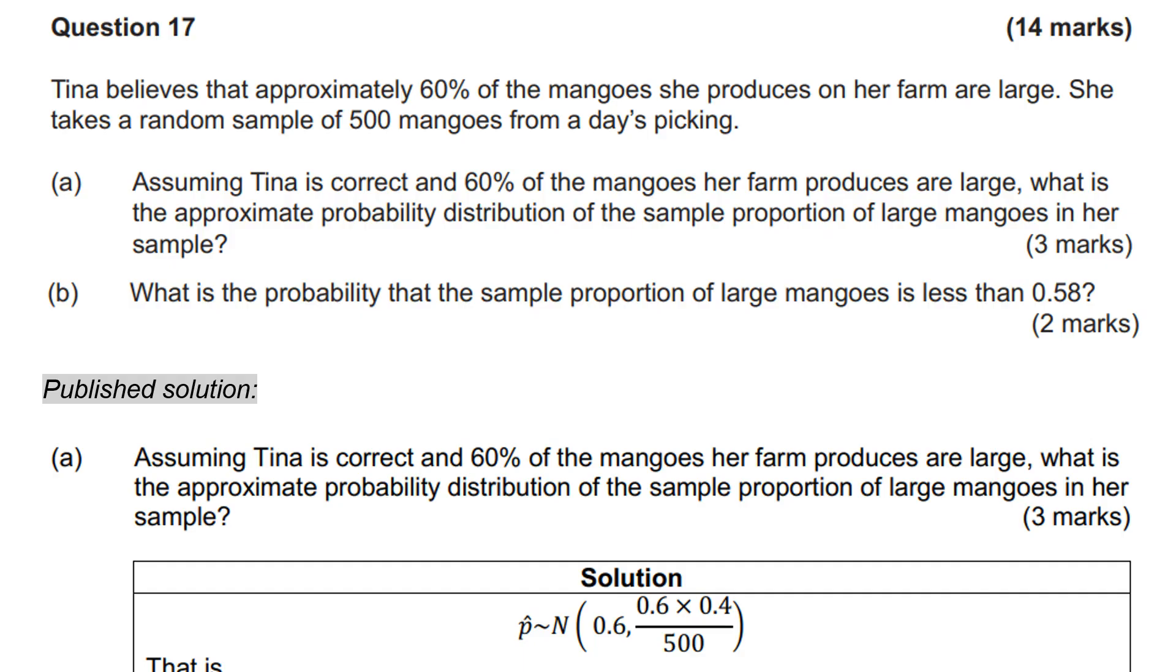Let's have a look at the question though. Here it is. Tina believes that 60% of the mangoes she produces on a farm are large, and she takes a random sample of 500 from the day's picking. And the first question for three marks is, assuming that she's correct and that 60% of her mangoes are large, what is the approximate probability distribution of the sample proportion of large mangoes in her sample?